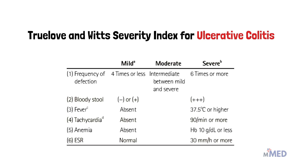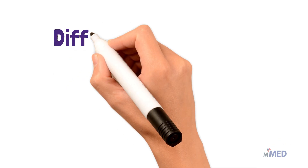The Truelove and Witts Severity Index categorizes ulcerative colitis as mild, moderate, or severe depending on frequency of defecation, bloody stools, presence of fever, tachycardia, anemia, etc. It is classified as severe if defecation frequency is six or more times per day and fever is 37.5°C or higher.